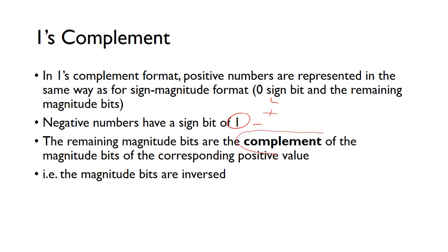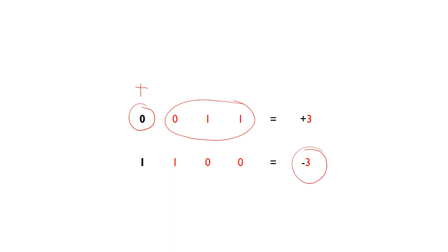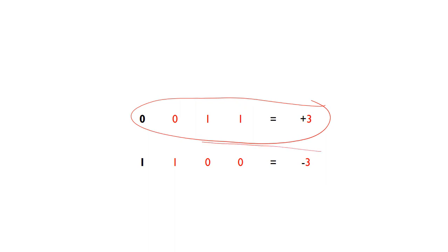Essentially, the complement means that the magnitude bits are inverted. For positive 3, the sign bit is 0 and the magnitude bits are 0, 1, 1 — the same as before. But for negative 3, the sign bit is 1, and we invert the magnitude bits. So 0, 0, 1, 1 is positive 3, and 1, 1, 0, 0 is negative 3.